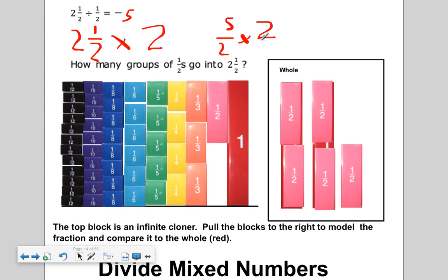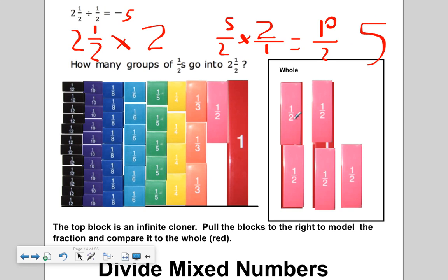How do you write two in fraction form? Two over one. If I multiply this, five times two is ten, two times one is two, and how many twos go into ten? Five whole. So let's see if this is correct — how many groups of halves do you see? I see five groups of one half.